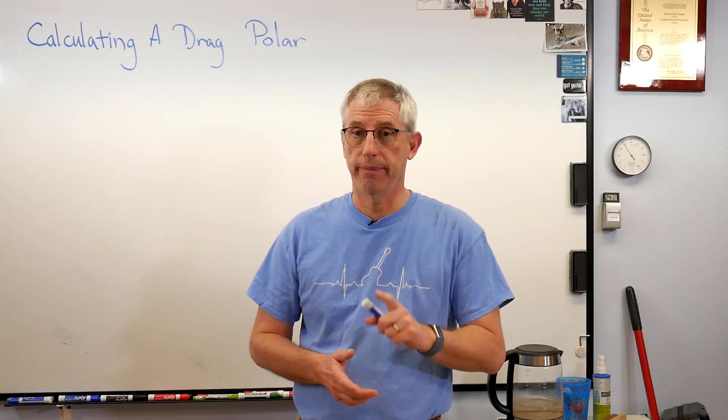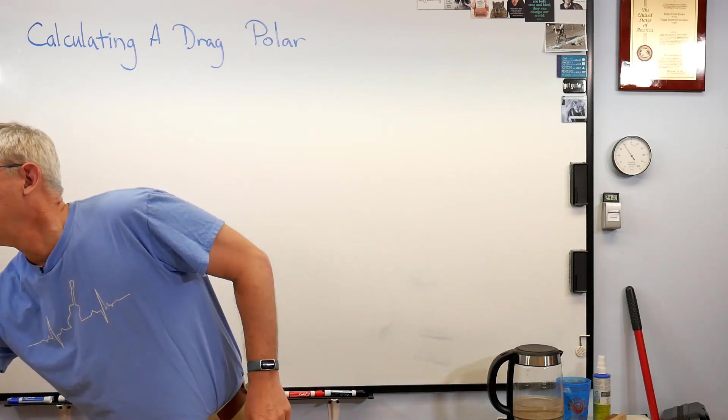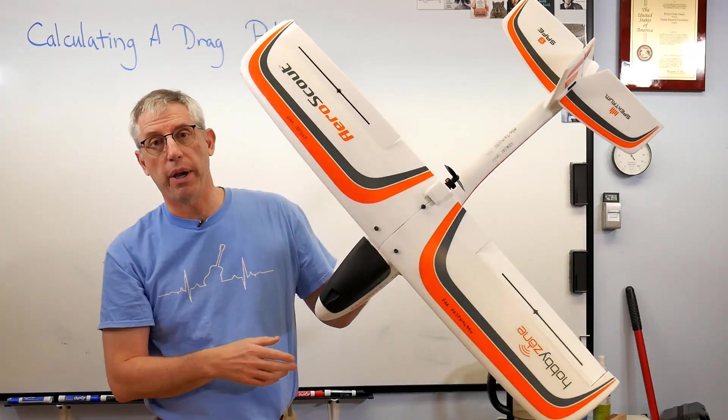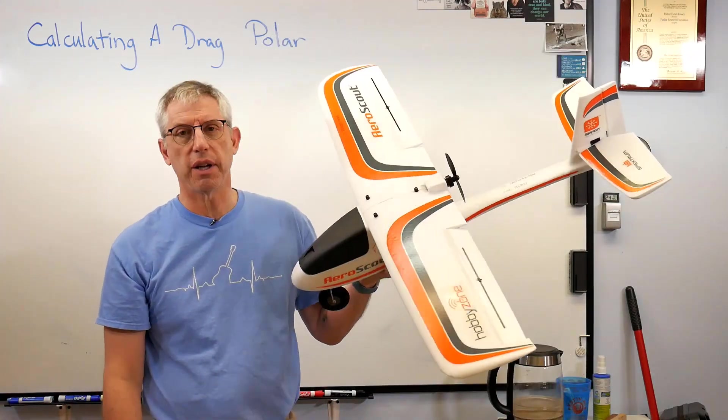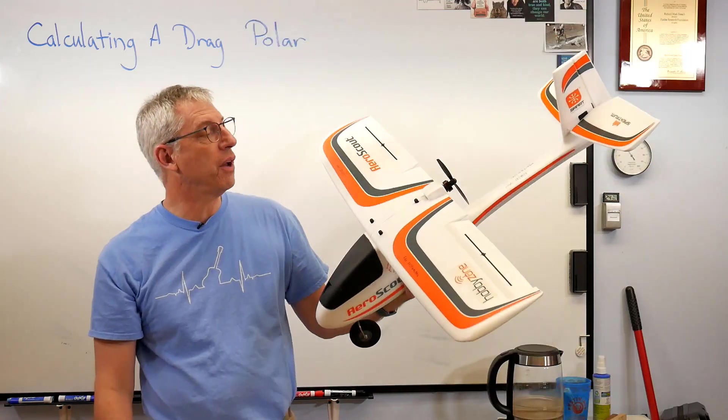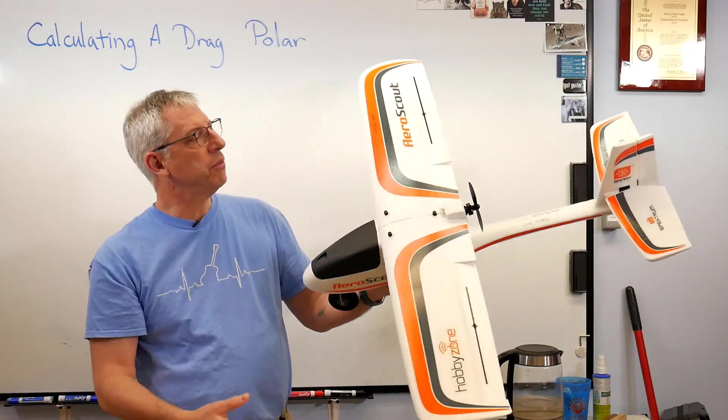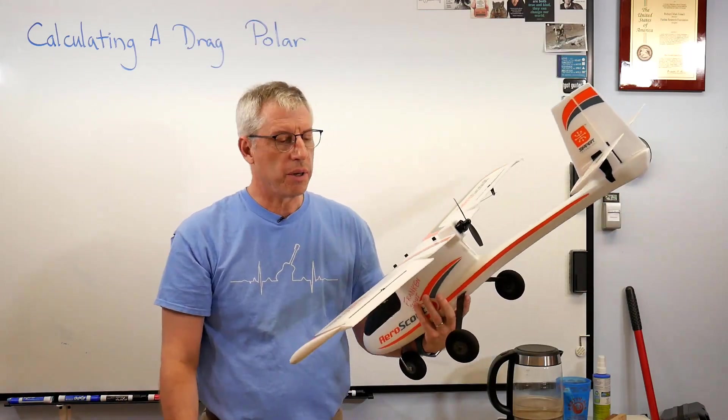First thing we need is an airplane. I have one right here, a little radio controlled airplane called an Aeroscout. This is mine, well actually parts of two planes that I crashed. This one's holding up fine though and it's a little trainer. I'm not an especially good radio control pilot yet so I'm still flying a trainer.